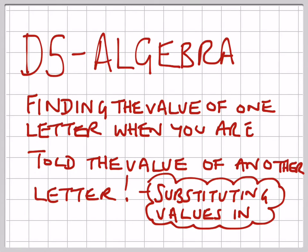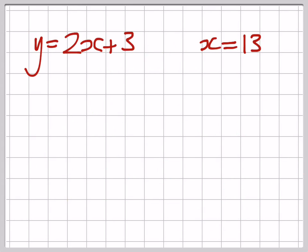D5 algebra - this is where you have to find the value of one letter when you're already told the value of one of the other letters in the equation. So you're not just going to get x's in an equation, you're going to get something like x's and y's, and you're told what one of them is worth.